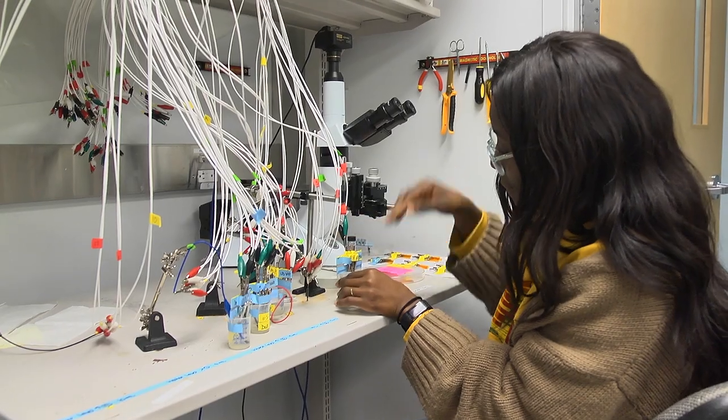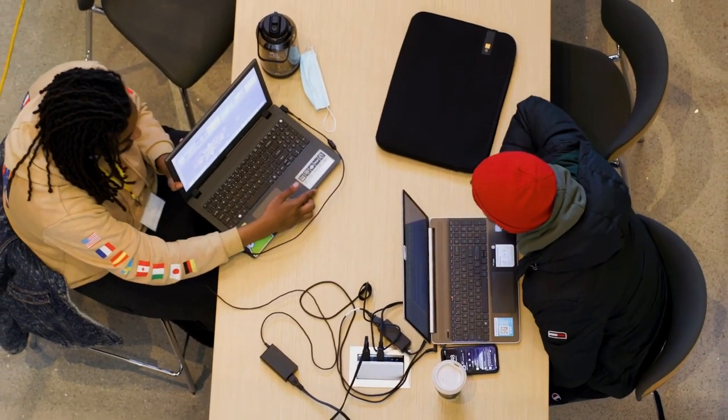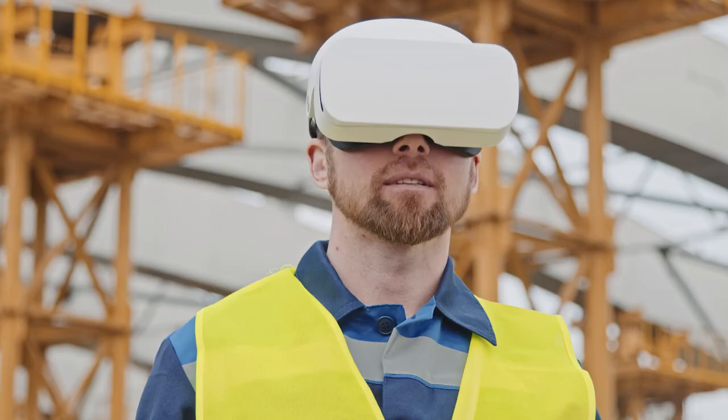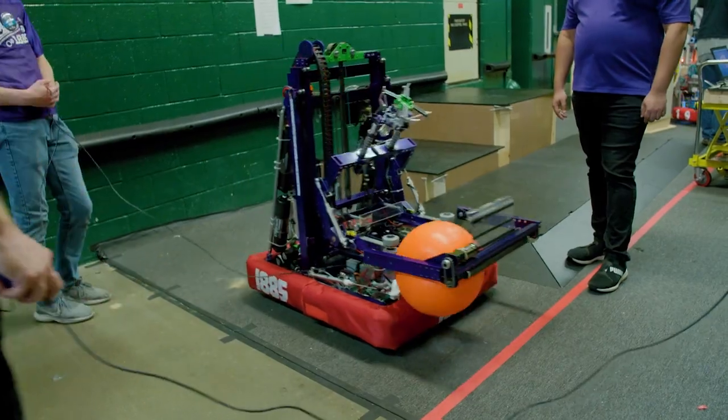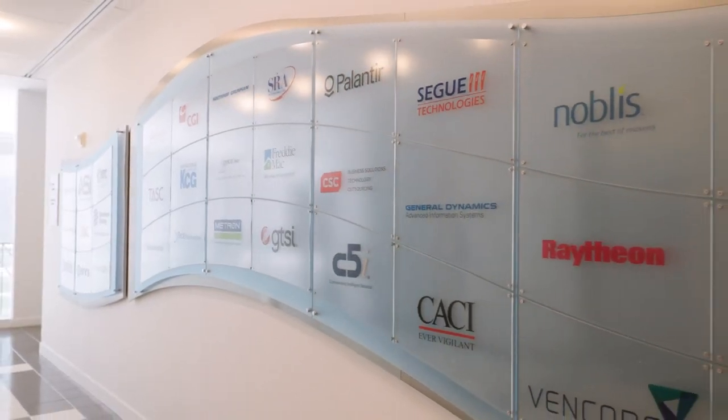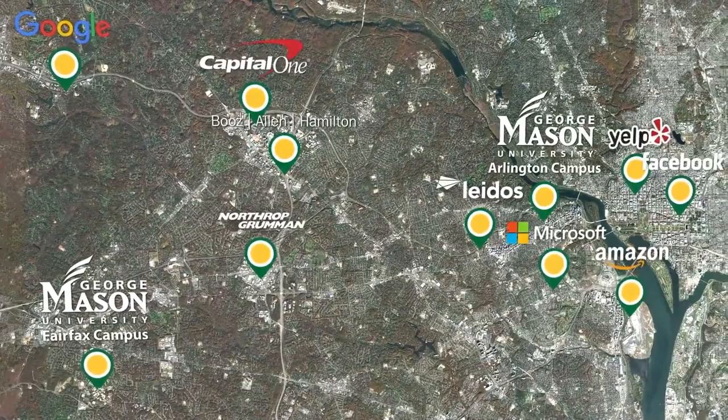Mason is one of the youngest universities ever to reach R1 status, and the College of Engineering and Computing's contributions toward that are significant with our annual awards now totaling more than $100 million. Our innovations have practical applications and we have strong long-term relationships with local companies and the federal government.